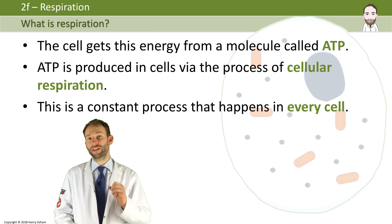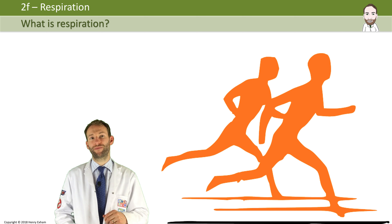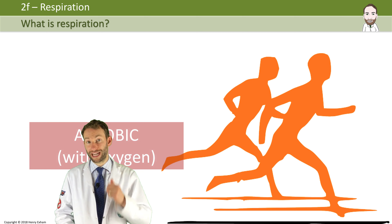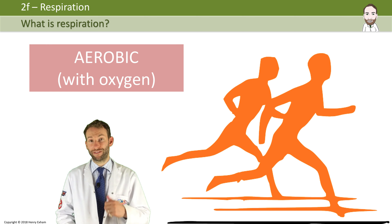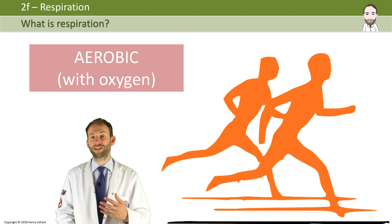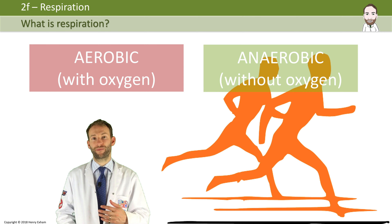Your cells can carry out two types of respiration. They can carry out one called aerobic, if they've got lots of oxygen. But if they don't get enough oxygen, they have to switch to something called anaerobic respiration.